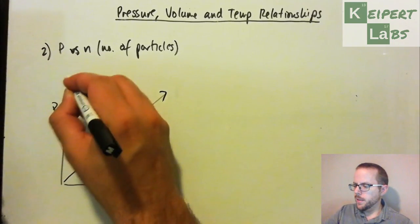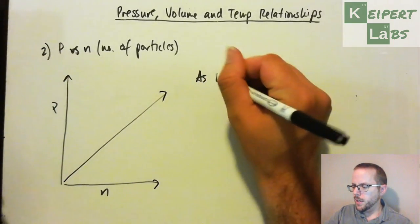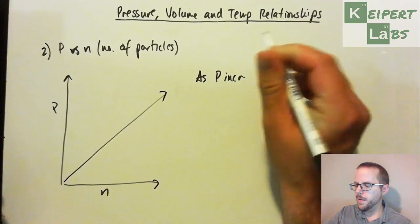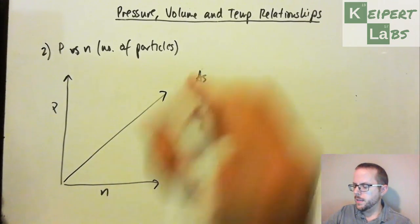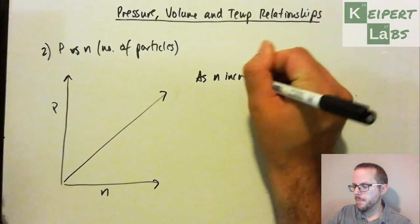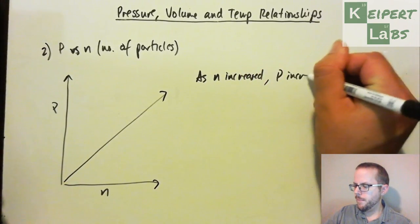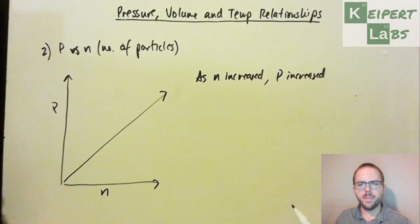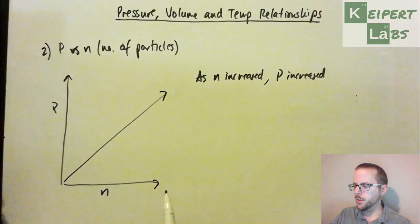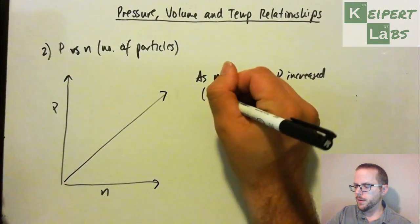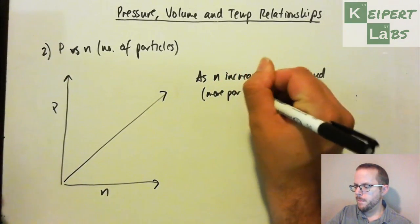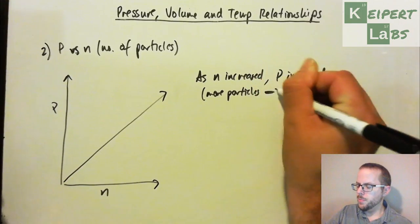Looking at our axes, so as n increased, the pressure increased. So that is, as we are increasing the number of particles, we get more particles, which leads to more pressure.